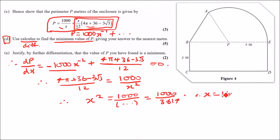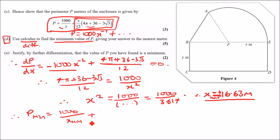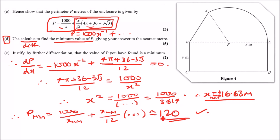Taking the positive value x ≈ 16.63, we substitute back into the perimeter equation P = 1000/x + x(4π + 36 − 3√3)/12. Calculating this gives P ≈ 120 meters to the nearest meter. The negative root is rejected since x must be positive.